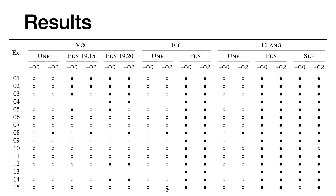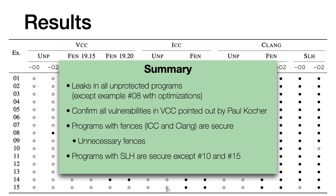Looking at the summary of main results: Spectator detected leaks in all unprotected programs, except for one case where the compiler optimizes away the branch instruction, thereby removing all speculative behaviors. We confirm all the vulnerabilities in the Microsoft compiler which have been pointed out by Paul Kocher. For the automated insertion of fences, Spectator confirms that the ICC and Clang compilers produce secure programs, even though sometimes they introduce unnecessary fences. Finally, Spectator successfully proves that all programs patched with speculative load-hardening are secure, except for two cases where we detect some minor leaks.